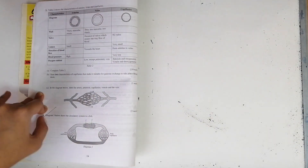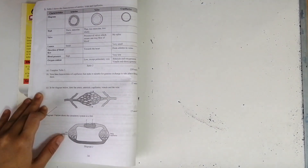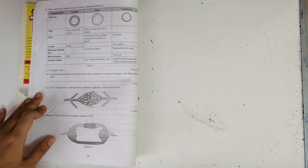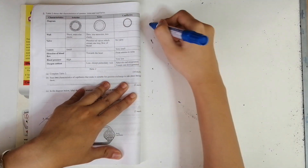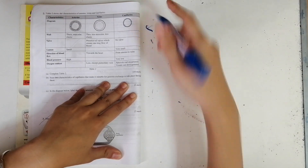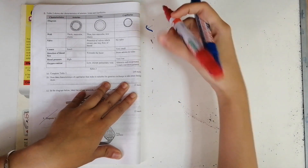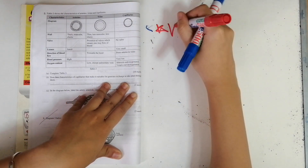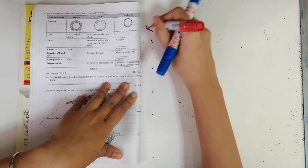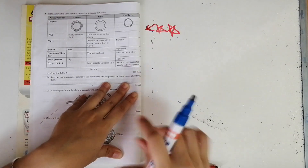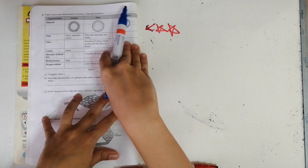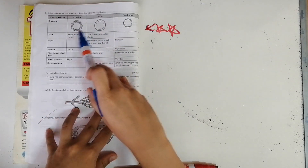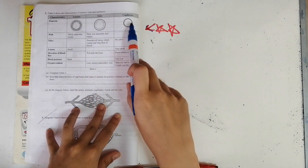Now we'll look at the second question, which is on the characteristics of arteries, veins, and capillaries. This table is actually super important, so try to memorize it. This question is about filling in the blanks — they gave two columns and we have to figure out the third one.